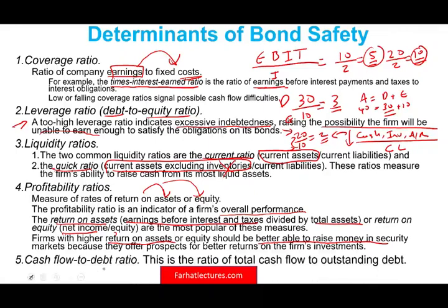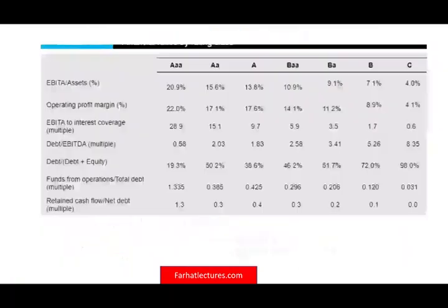The cash flow to debt ratio is arguably the most accurate indicator, because at the end of the day you pay your debt with cash. So what is your cash flow in relationship to your debt? Those are five important financial indicators that rating agencies examine.